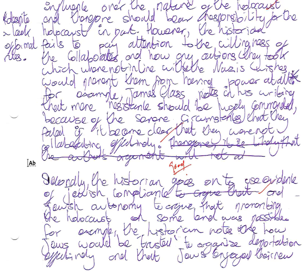Then he moves on to the second paragraph, which is really the key one. Secondly, the historian goes on to use evidence of Jewish compliance and Jewish autonomy to argue that the Holocaust in some way was only possible because of that. This is the real key to the historian's argument.